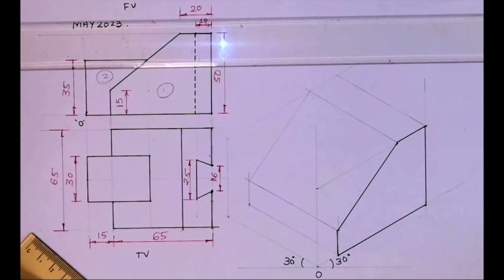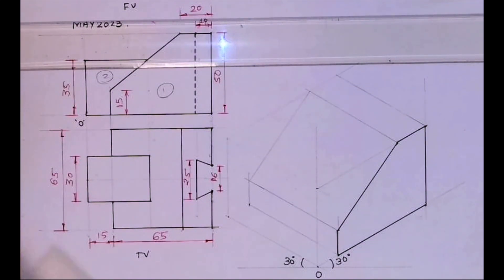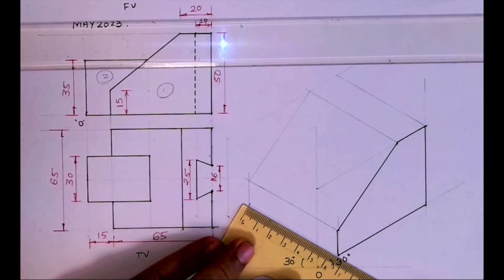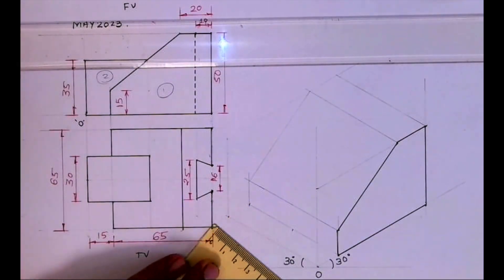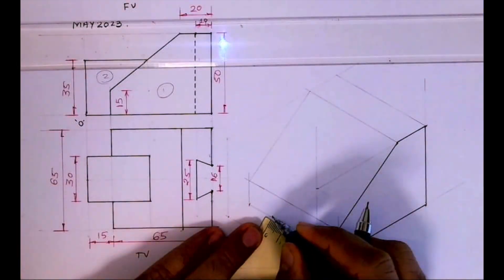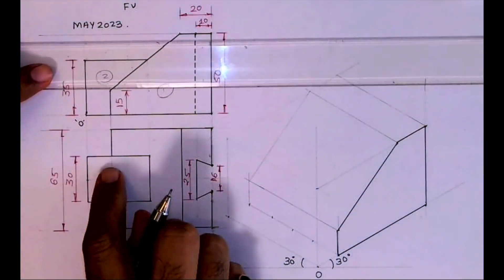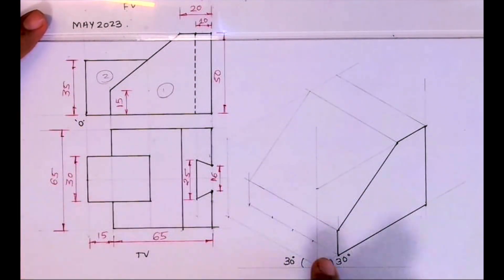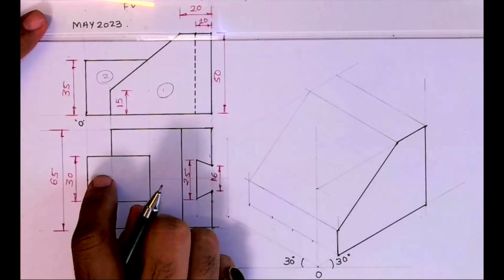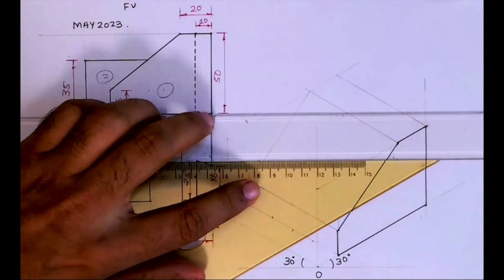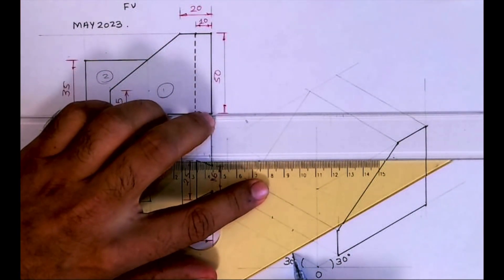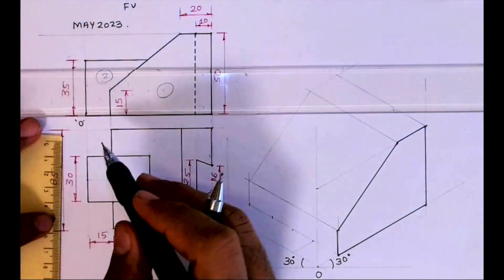Now after that we need to draw part two. The width of part two is 30, so I'll take the midpoint of 65 and mark 15 on both sides. Part two is inside, so that distance is taken from the center. From there I'm drawing a horizontal line, then I'll go up by 35.